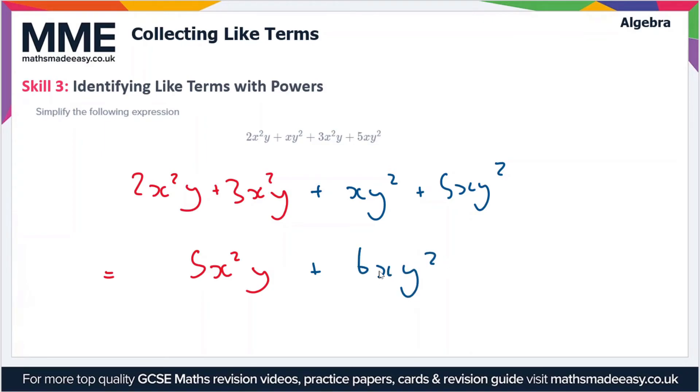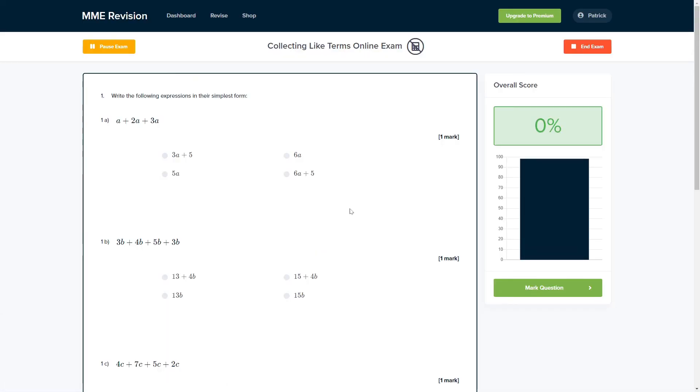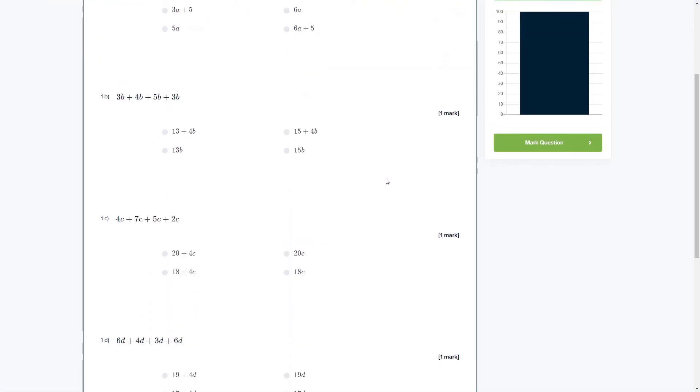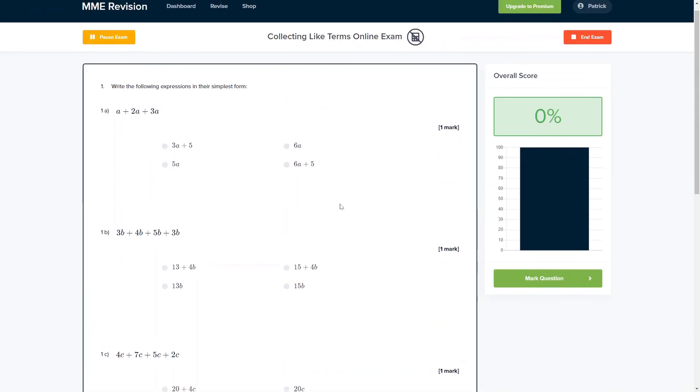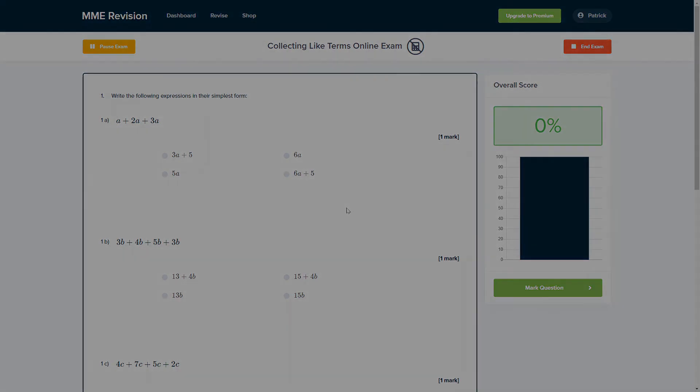Collecting like terms is a skill that's crucial to algebra, so it's important that you get a lot of practice. You can do so with our online exam. This is available through our revision platform. If you take the test, you'll find loads of different questions to have a go at, all of which are instantly marked. So this is a really good way of keeping track of your progress, finding out where you're going wrong and how you can improve. If you're interested, you can click the link below and it will take you straight there.